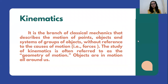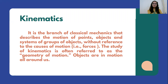So to start with, we define first what kinematics is. Kinematics is actually a branch of classical mechanics that describes the motion of points, objects, and systems or groups of objects without reference to the causes of motion. We are going to focus only on the description of motion. Also, kinematics is referred to as the geometry of motion, where we can apply what we have learned in geometry during our high school lessons.